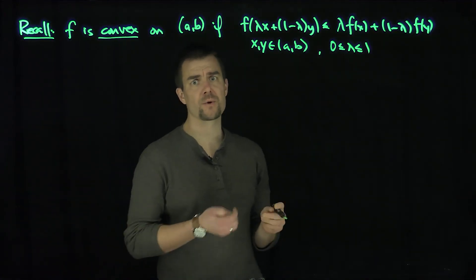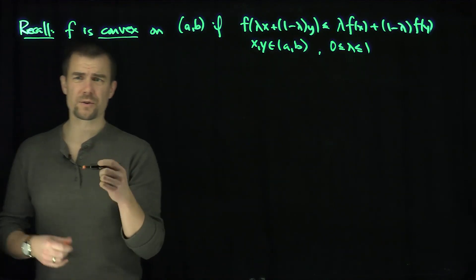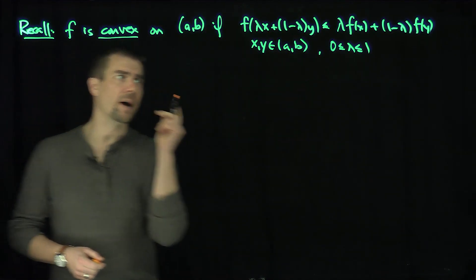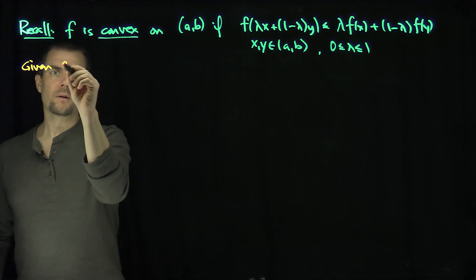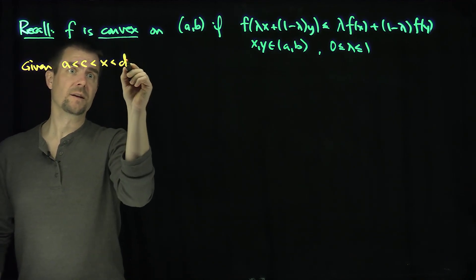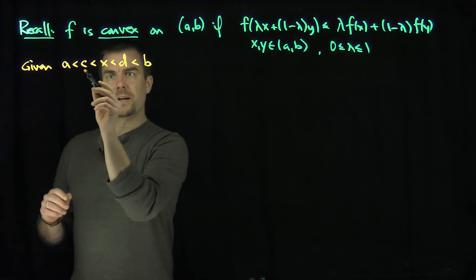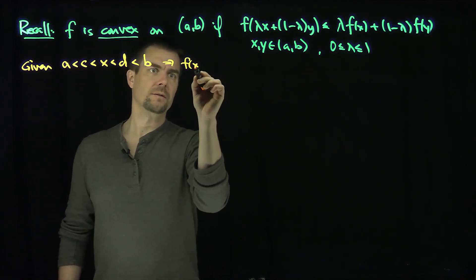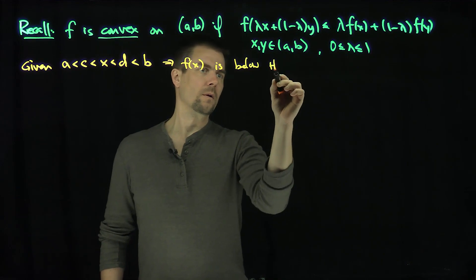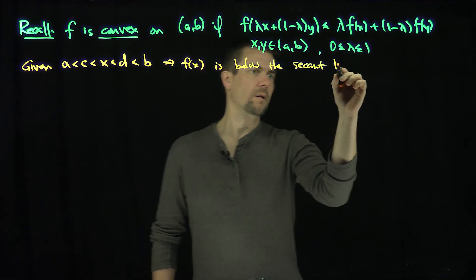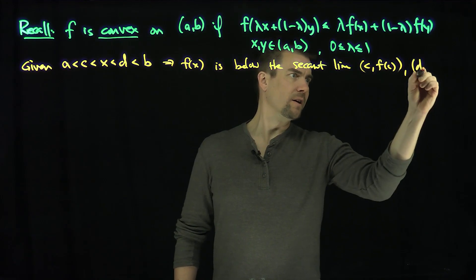One immediate consequence of convexity is that you have to be underneath the chord. So let's prove that first preliminary result. Given a < c < x < d < b, I claim that f(x) is below the secant line from (c, f(c)) to (d, f(d)).